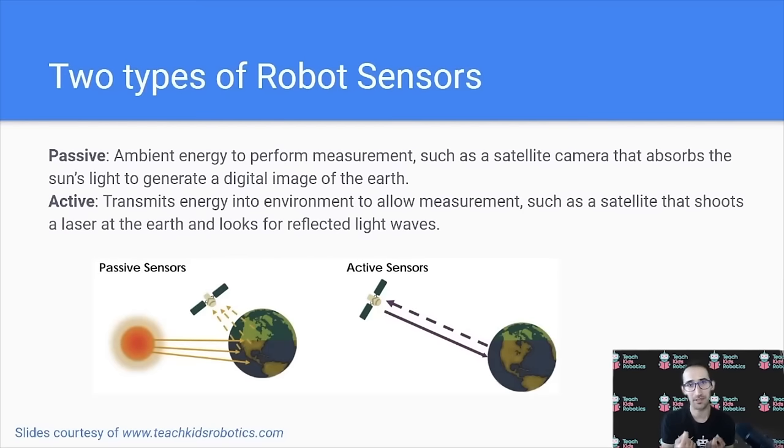There are two types of robot sensors, passive and active. A passive sensor relies on the ambient energy in the world around it to perform a measurement, such as the satellite camera that absorbs the sun's light and looks at the reflections to generate a digital image of the earth. Or consider a thermometer that uses the ambient temperature of the world around it in order to increase what it reads.